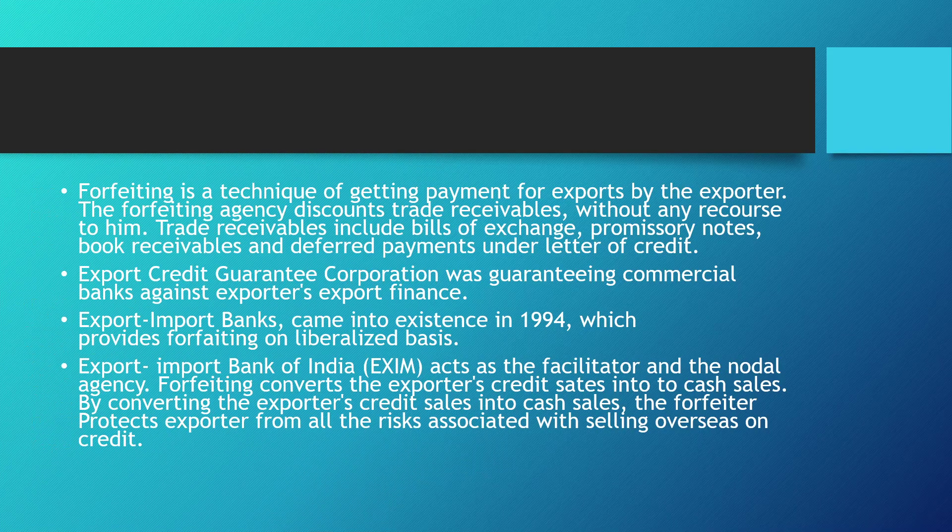Forfeiting is a method of getting payment for exports by the exporter. The forfeiting agency discounts trade receivables of the exporter without any recourse to the exporter in the event of the buyer not paying for the transaction. Trade receivables include bill of exchange, promissory notes, book receivables, and deferred payments under the letter of credit.